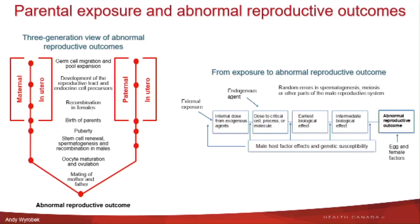Based on the internal dose, you also need to understand how much of that internal dose is needed to start affecting important cellular processes or molecules, and how that triggers an early biological response from the system that may be able to compensate for that exposure. You can distinguish between earlier responses — for example, activating the cell cycle control — to intermediate biological effects. The end result is that if you're not able to properly take care of that insult, you will end up with an abnormal reproductive outcome.